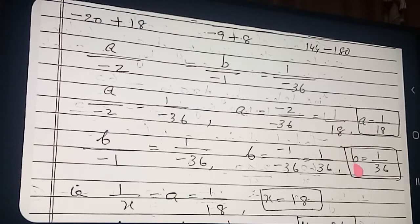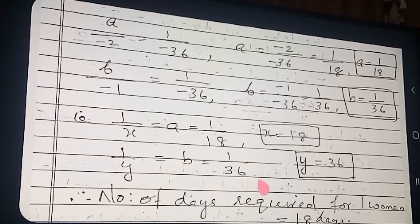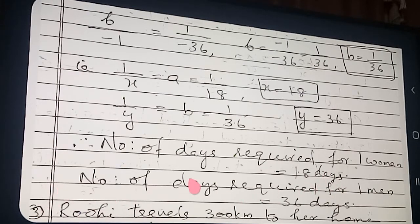Similarly, B/(−1) = 1/(−36), so B = 1/36. Now since 1/X = A = 1/18, we get X = 18. And 1/Y = B = 1/36, so Y = 36. Therefore one woman alone takes 18 days and one man alone takes 36 days.